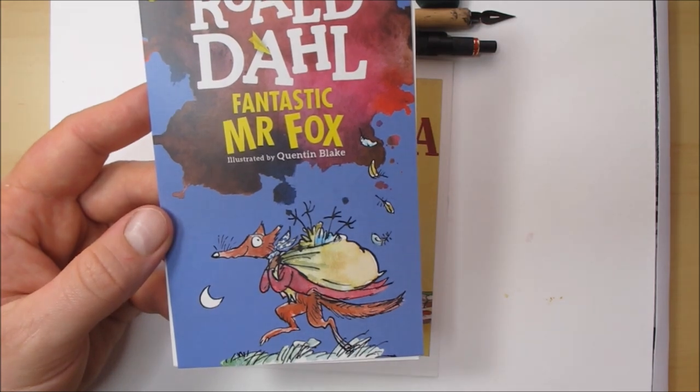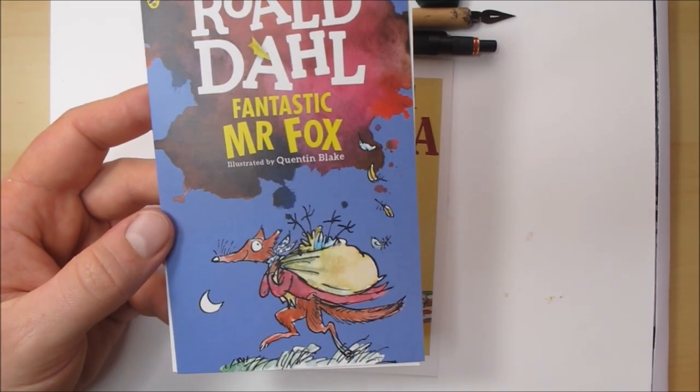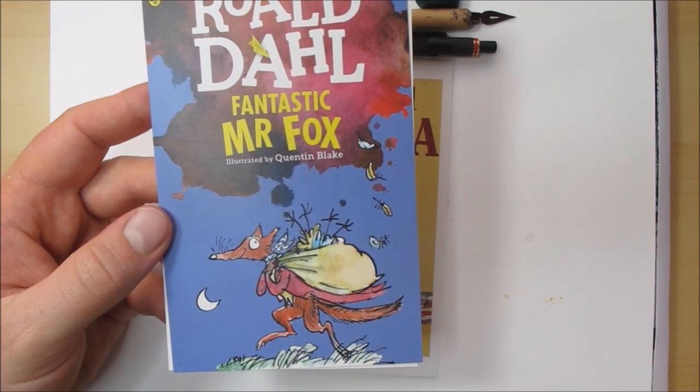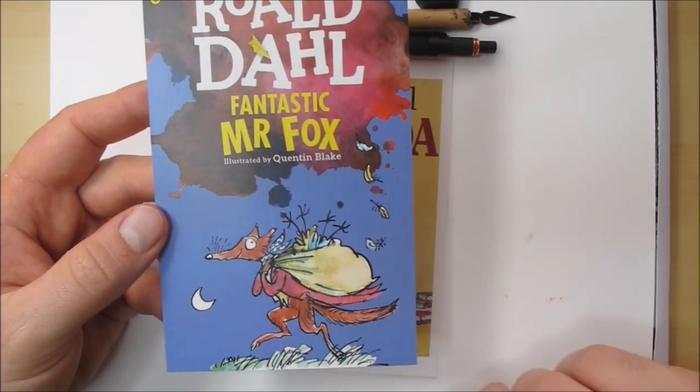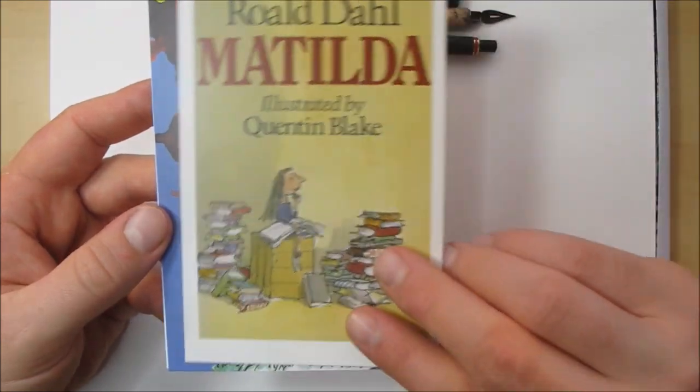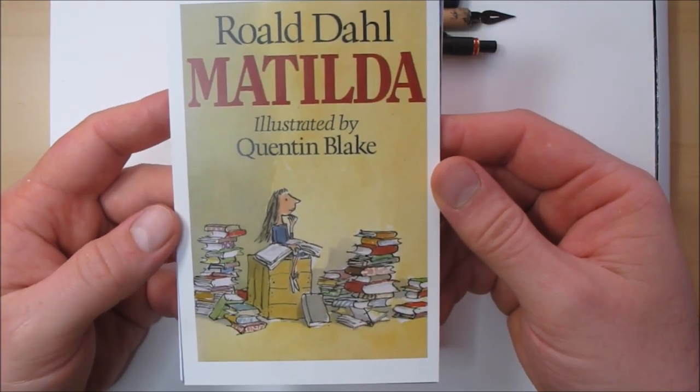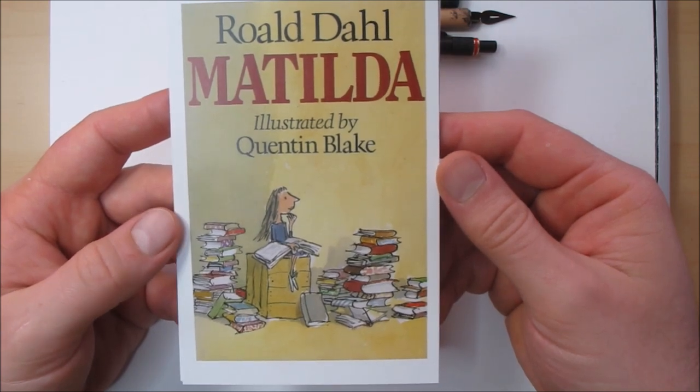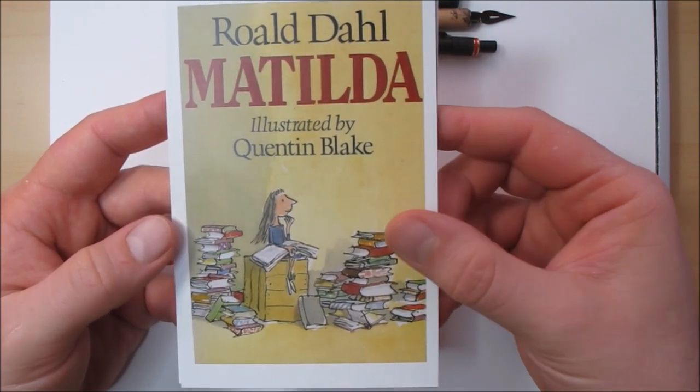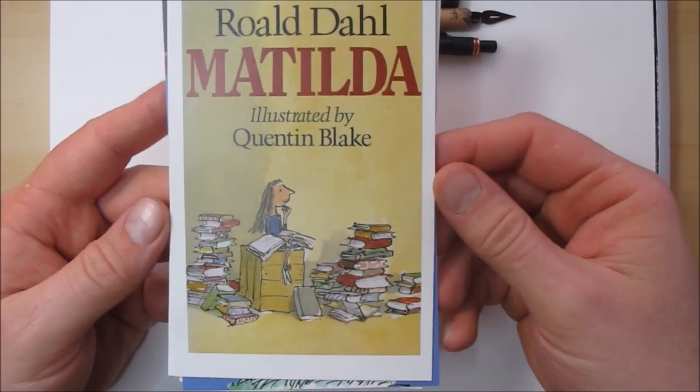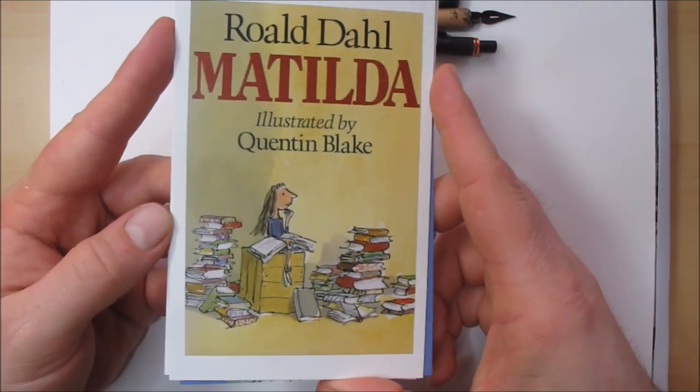This is another one of the more well-known pieces by Quentin Blake, which is Fantastic Mr. Fox. I think that was one of my favorites when I was growing up. And again, one of the more well-known pieces is this one, Matilda, illustrated by Quentin Blake. He wasn't the only illustrator to illustrate some of these works, but by far the most popular and widely known.